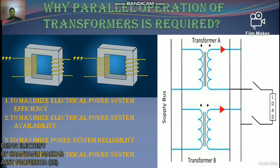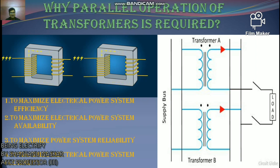There is always a chance of increasing or decreasing future power demand. If demand is predicted to increase, there must be a provision for connecting more transformers in parallel to fulfill the extra demand, as it is not economical to install a bigger-rated single transformer based on forecasted future demand. If future demand decreases, transformers running in parallel can be removed to balance capital investment and its return.